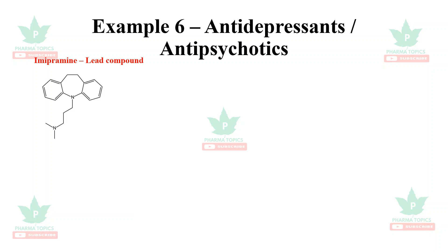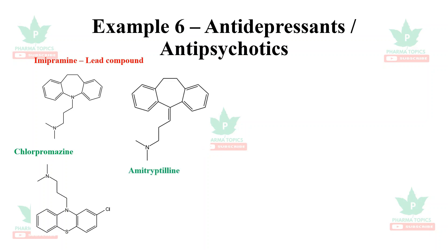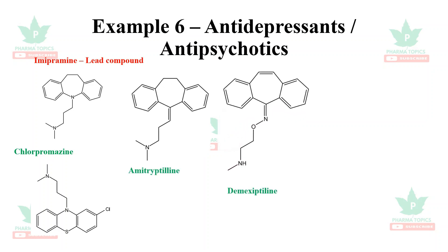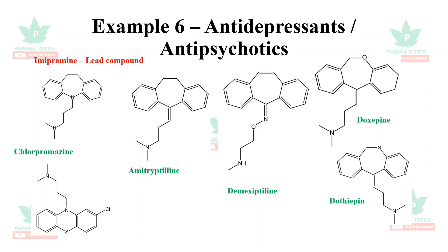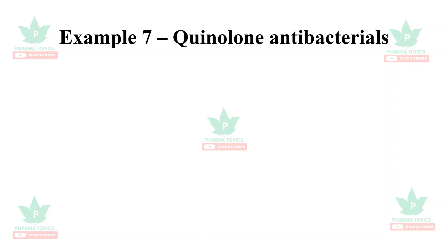A sixth example covers antidepressants and antipsychotics. The lead compound was imipramine, from which chlorpromazine, an antipsychotic, was optimized. Further optimization yielded amitriptyline, desmethyltriptyline, doxapine, and dothiapine — most of which are used as antipsychotics, even though the original lead was an antidepressant.